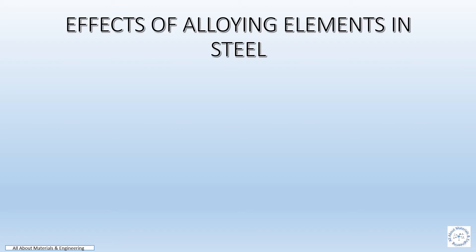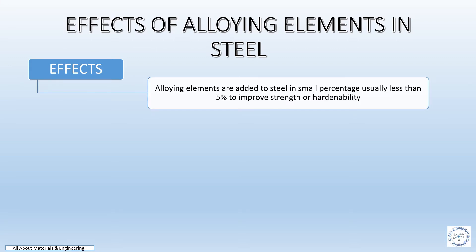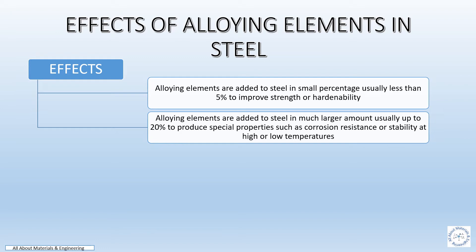Now we will see the effects of alloying elements in steel. Alloying elements are added to steel in small percentages, usually less than 5%, to improve strength or hardenability.